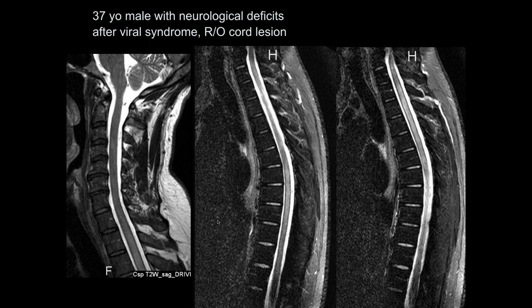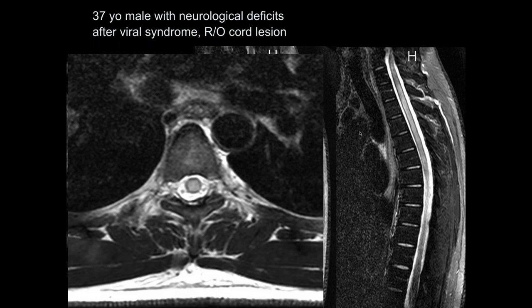37-year-old with neurologic deficits after a viral syndrome, question of cord lesion. On STIR there is a lot of signal in the cord — kind of diffuse without a discrete focal lesion that's easy to account for. The signal is starting distally in the cord, not like a peripheral process.